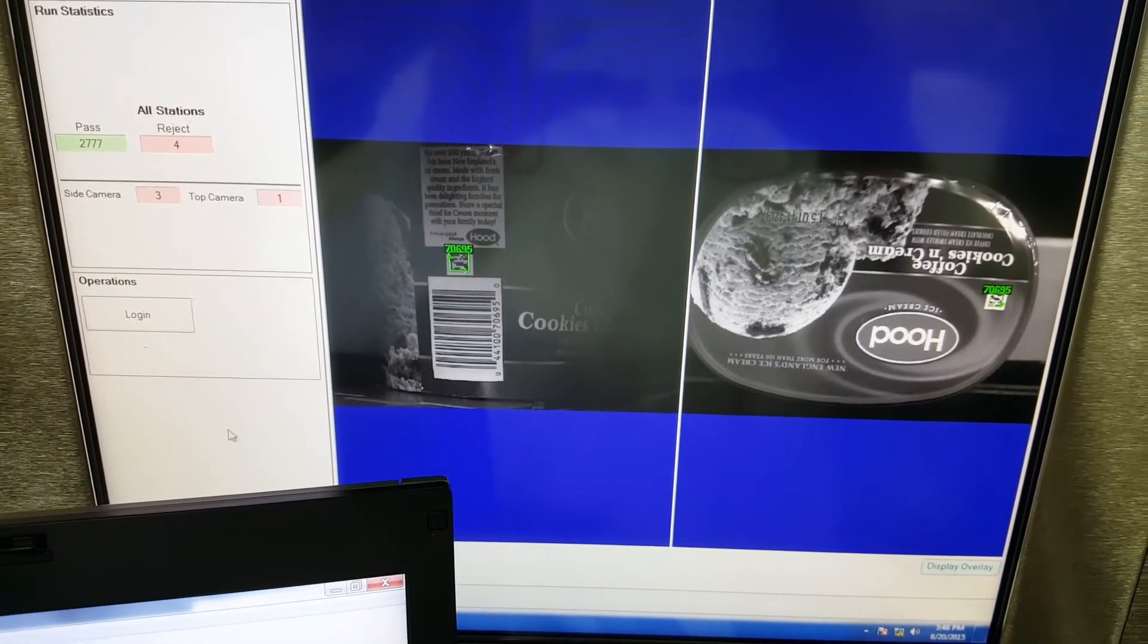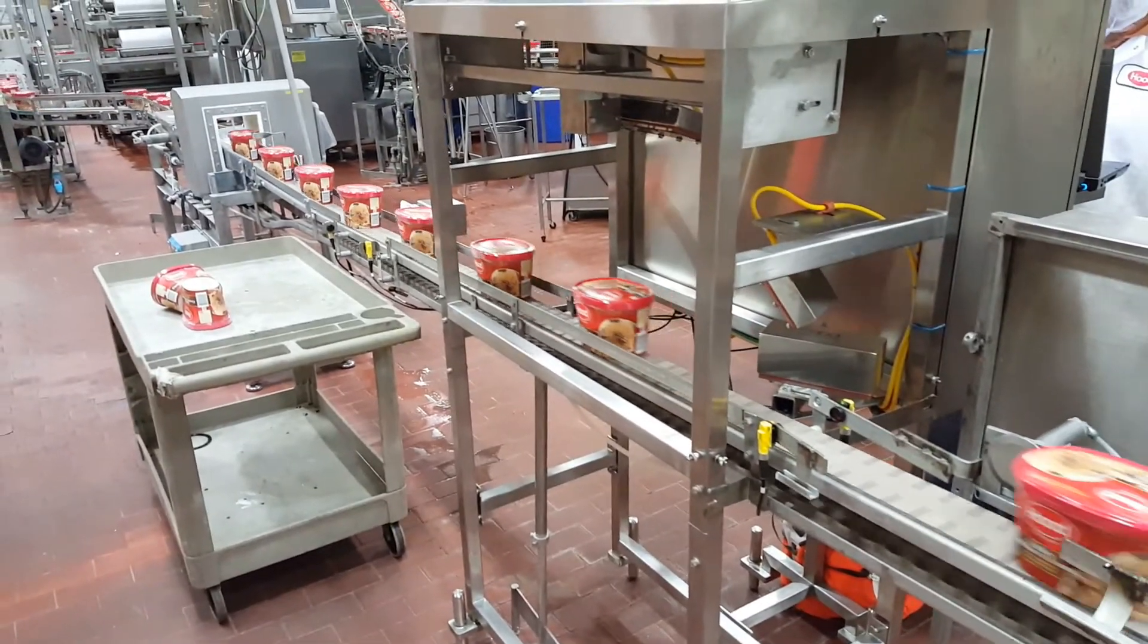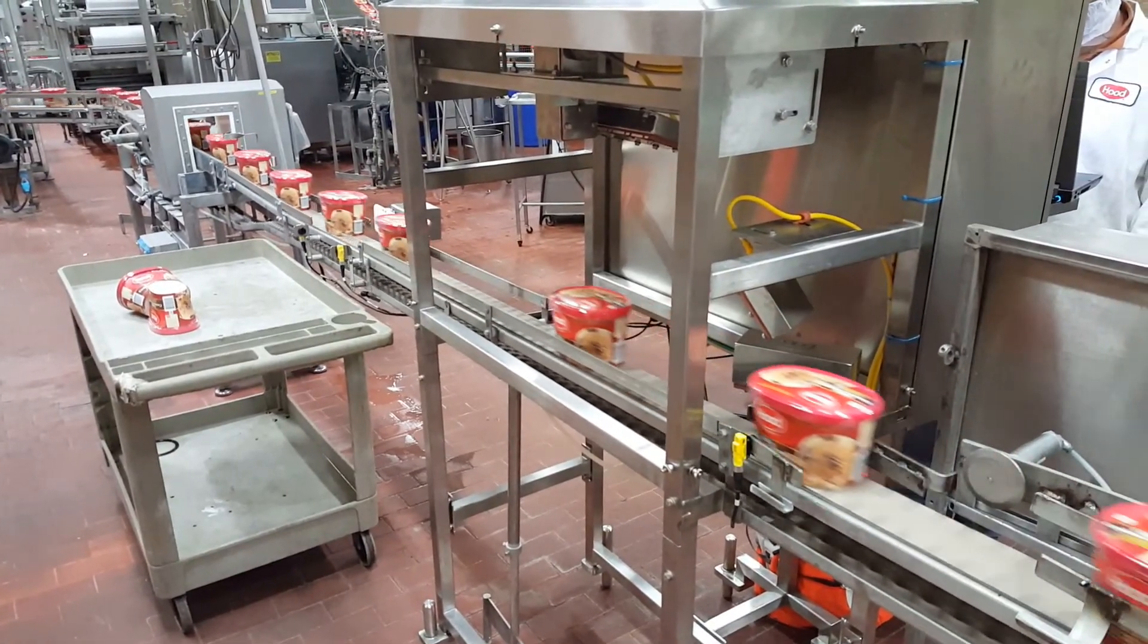SureLabel can detect a missing label, a poorly applied label, when a wrong label has been applied, and when the wrong container is being used.